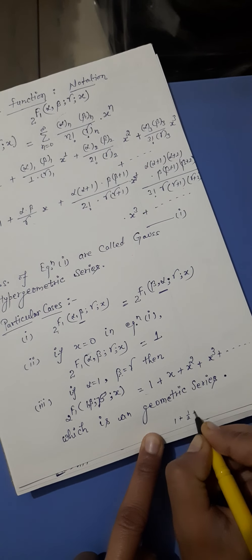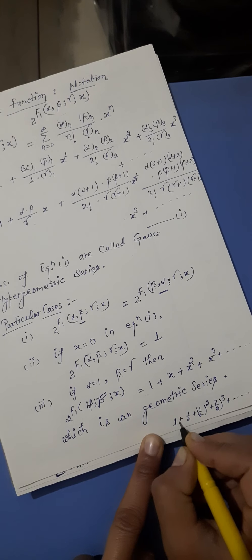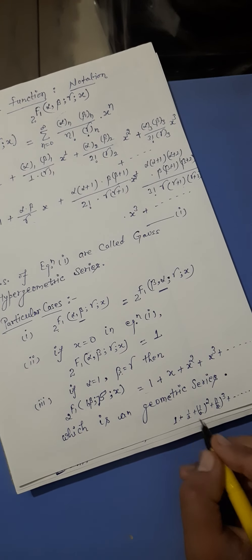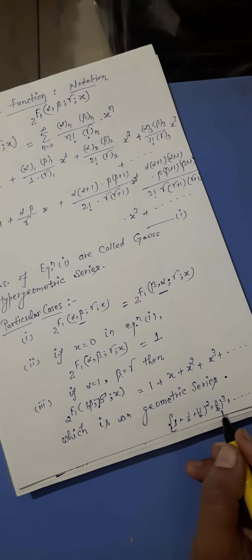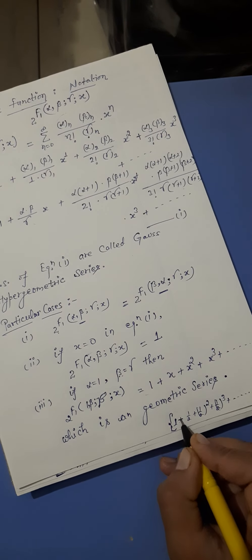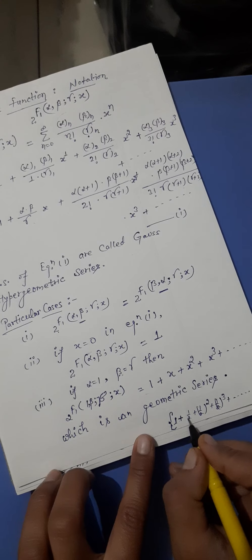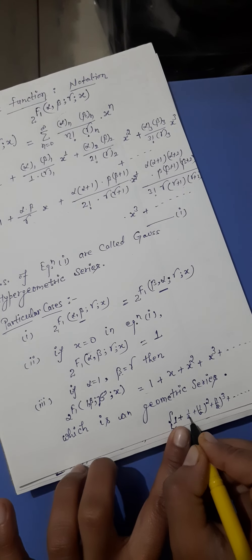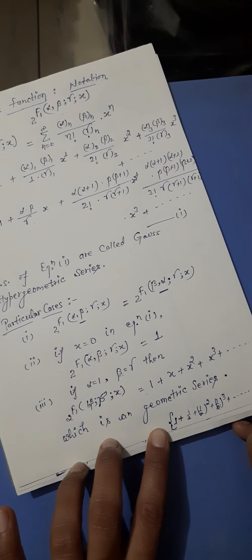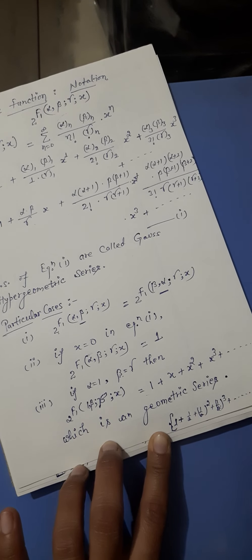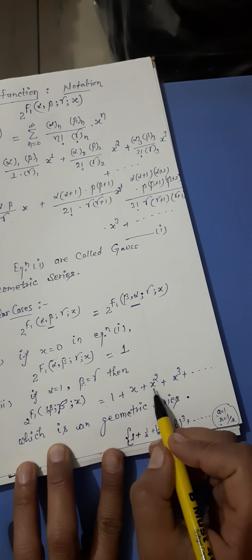For example, 1 + 1/2 + (1/2)² + (1/2)³ + and so on. This is a geometric series with first term a=1 and common ratio r = 1/2. The sum of this geometric series equals 1/(1-r).